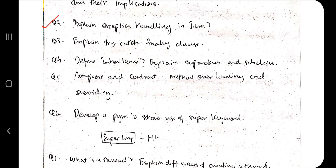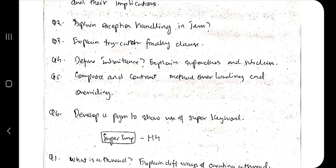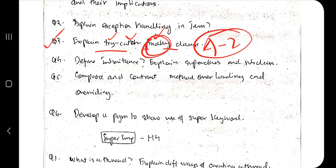The next question is: explain exception handling in Java. You need to know what exception handling is, how to handle it, why you need to handle it, what happens if you don't handle it, and what the syntax is. Diving deeper, we have try, catch, and finally clauses — the significance of each, when to use them, what happens if you don't write finally. All these things are discussed in depth in the theory video.